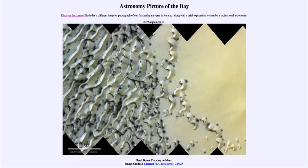Mars does have a very thin atmosphere, so it has winds as we have here on Earth. In fact the winds can be very intense, and as we've seen, great dust storms on Mars are kicked up by the winds.